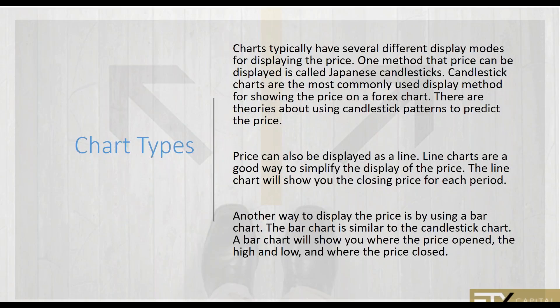Charts typically have several different display modes for displaying price, and they come in three different types: bar charts, candlestick charts, and line charts. All other charts — and there are lots of variations out there — are based on these three underlying chart types.